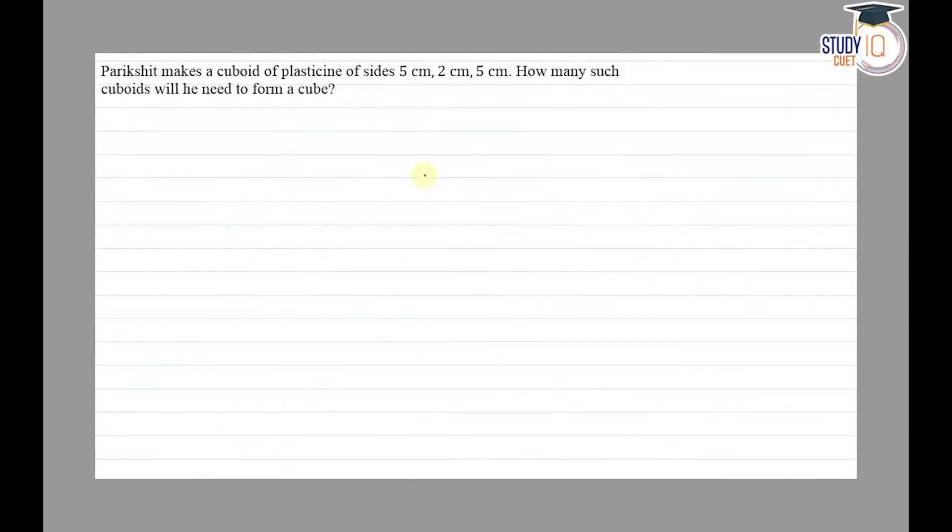Hello everyone, this question appears in class 8th NCERT chapter of cubes and cube roots. This is the fourth question of exercise 7.1. The question says that Pariksit makes a cuboid of plasticine of sides 5 centimeter, 2 centimeter